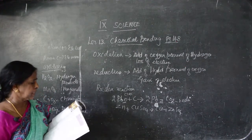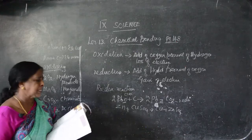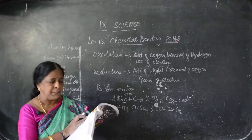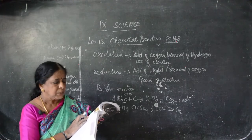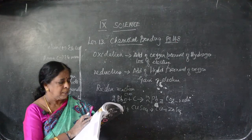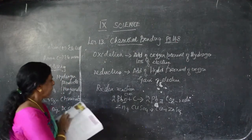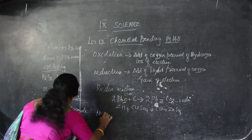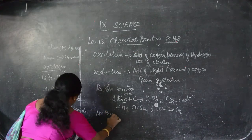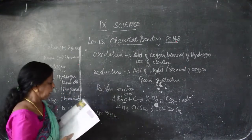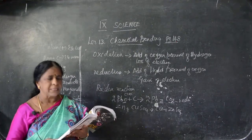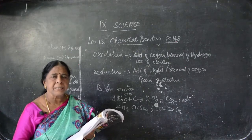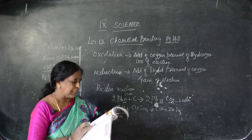Similarly, reducing agents: substances which have the ability to reduce other substances are called reducing agents. Some common reducing agents are: sodium bromide, NaBH₄, lithium aluminate, and metals like platinum and palladium. These are the examples for reducing agents.